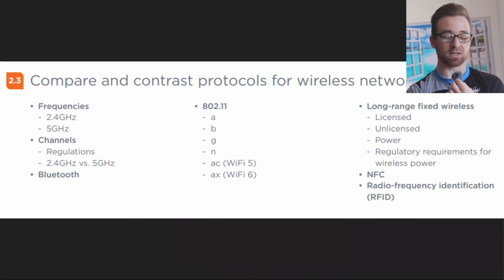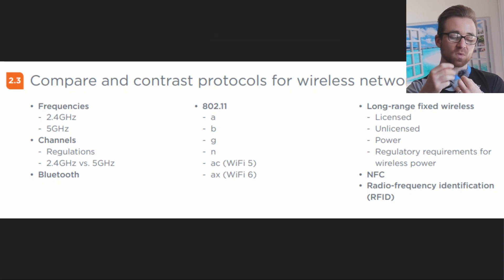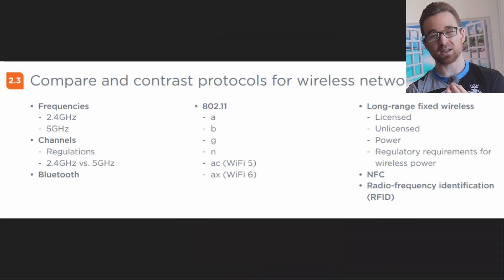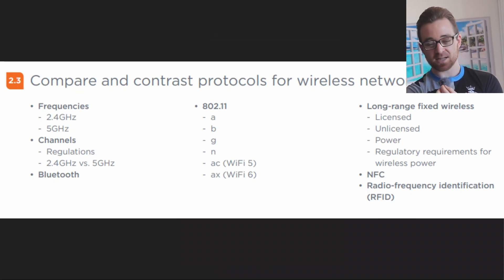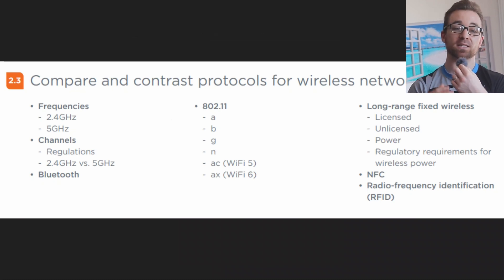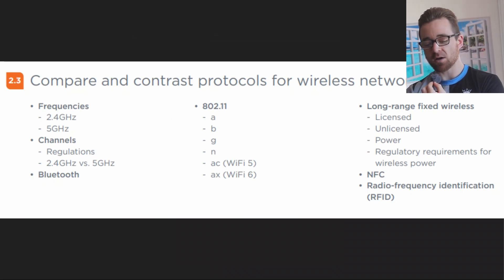We're going to be looking at frequencies — what are the frequencies and what are the differences between them. We're going to look at different channels and how that relates to the frequencies. We're going to look at Bluetooth, the different wireless standards otherwise known as 802.11 standards — standards A, B, G, N, AC, and AX. We're going to look at long-range fixed wireless, what you need to consider when setting that up. And we're going to look at NFC and RFID. We're going to look at all that right now.